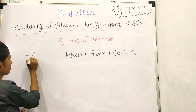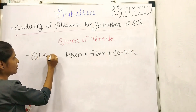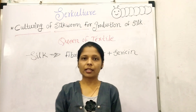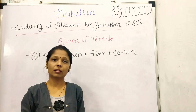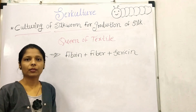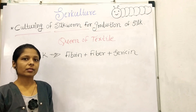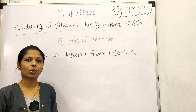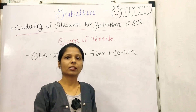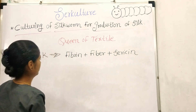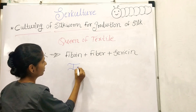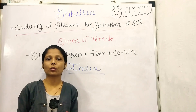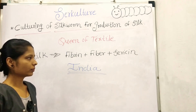Silk is composed of fibrin fiber and sericin. Sericulture is an agro-based industry — with low investment, we get more benefit. China is the largest producer of silk throughout the world, and following China, India is the second largest producer of silk.